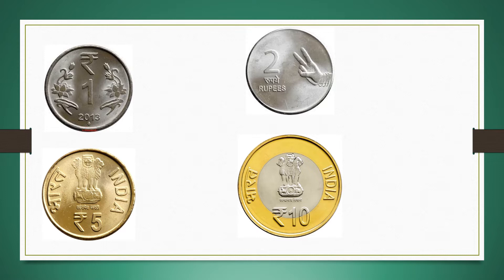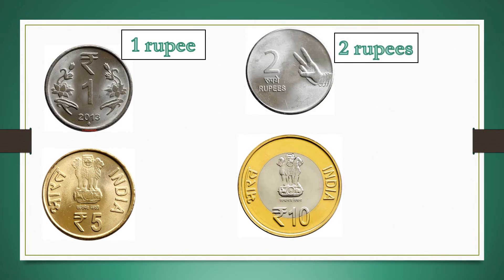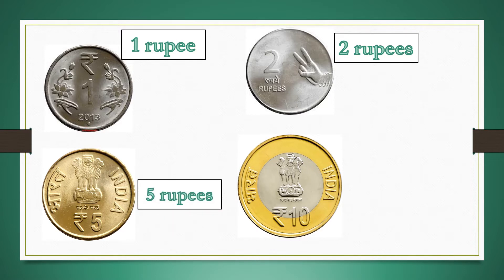Children, observe these coins carefully and find their values. The first coin has the number 1 written on it, so it is a 1 rupee coin. Next is the 2 rupees coin. Next, the 5 rupees coin. Then the 10 rupees coin.